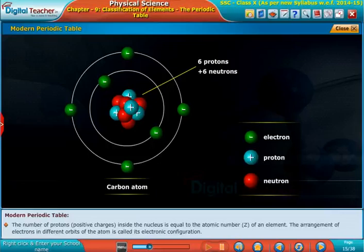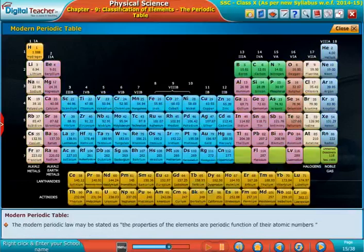The number of protons, or positive charges, inside the nucleus is equal to the atomic number Z of an element.